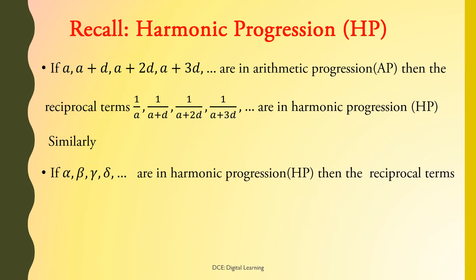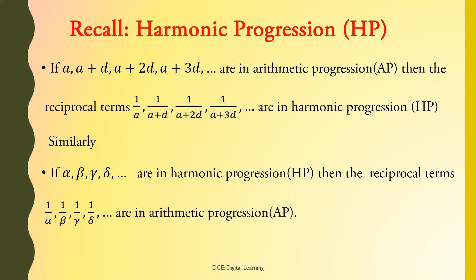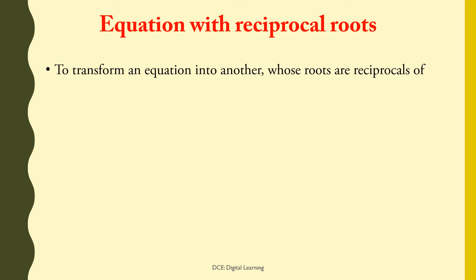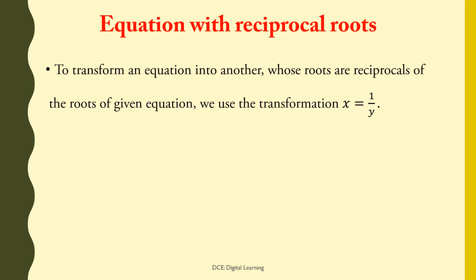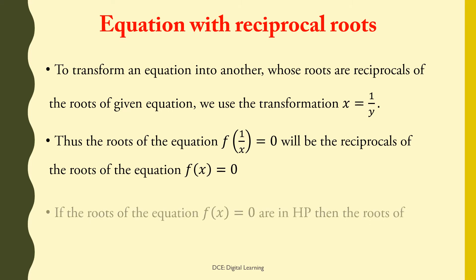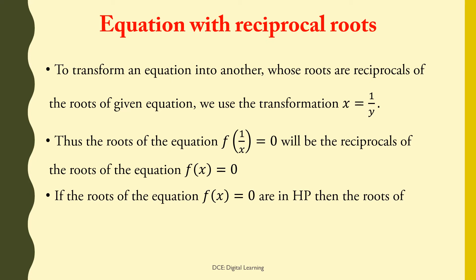Similarly, if alpha, beta, gamma, delta and so on are in harmonic progression (HP), then the reciprocal terms 1/alpha, 1/beta, 1/gamma, 1/delta and so on are in arithmetic progression (AP). To transform an equation into another whose roots are reciprocals of the roots of the given equation, we use the transformation x = 1/y. Thus, the roots of f(1/x) = 0 will be the reciprocals of the roots of f(x) = 0. If the roots of f(x) = 0 are in HP, then the roots of f(1/x) = 0 are in AP, and vice versa.